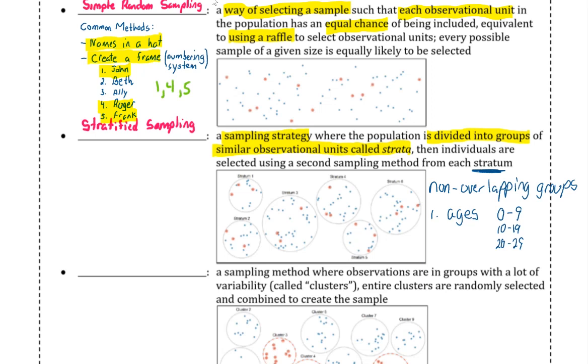We could also talk about academic status such as freshman, sophomore, junior, or senior. So each strata would be a different academic status, a different level in school, and they'd be non-overlapping. And then to create our stratified sample, we would use a second sampling technique to then sample from inside each stratum.